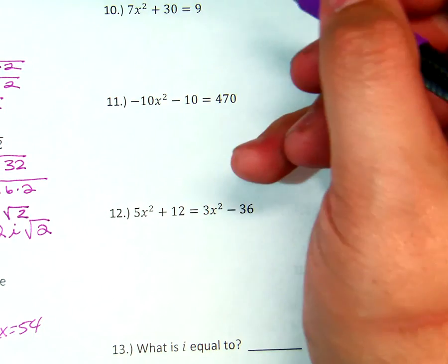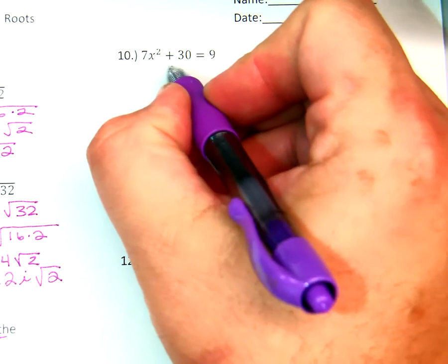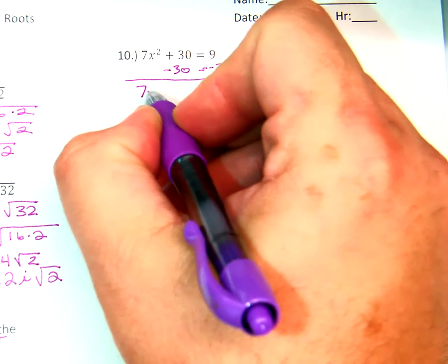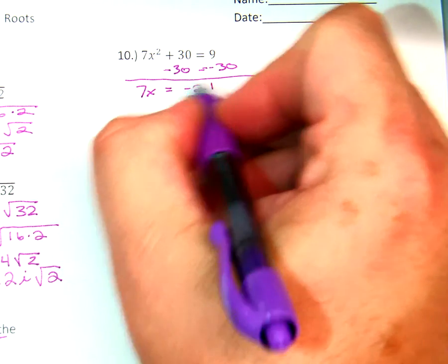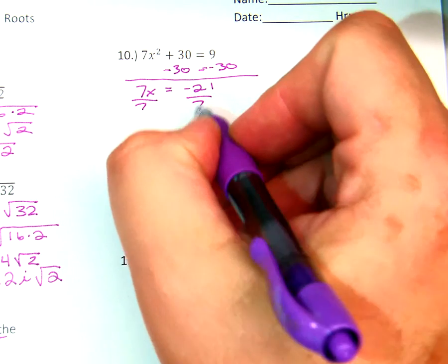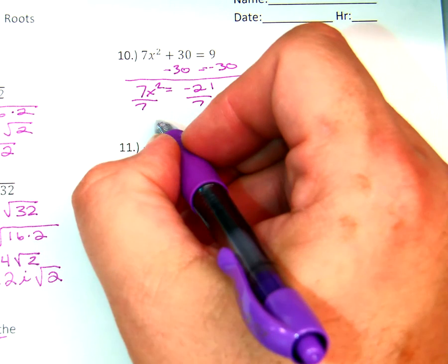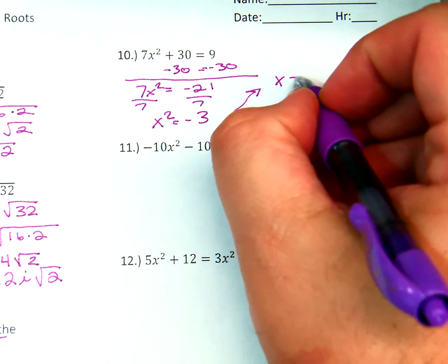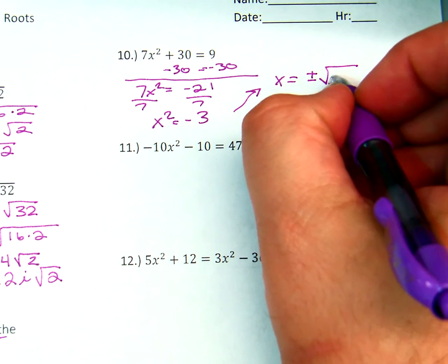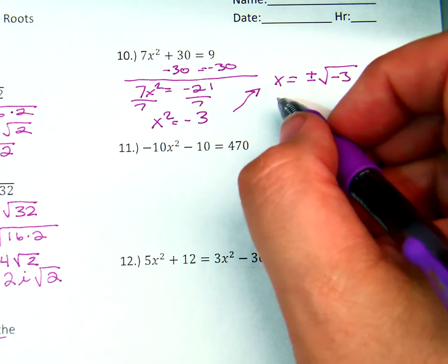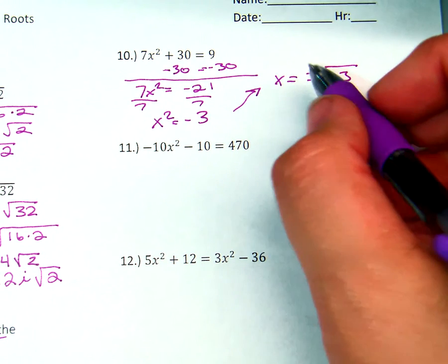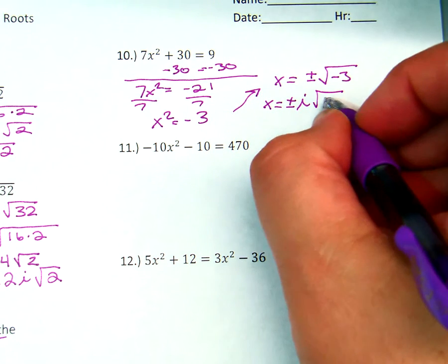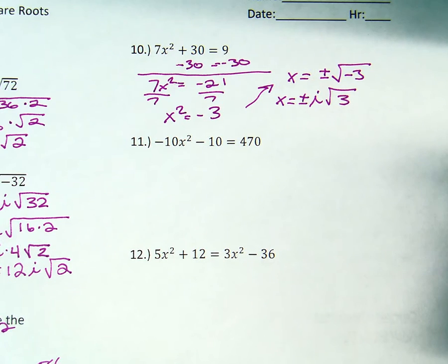Now we have to subtract 30 from both sides: 7x squared equals negative 21. Dividing gives x squared equals negative 3. So x is going to be equal to positive and negative square root of negative 3. We can take the square root of a negative number now because we know that one special imaginary number. So x equals positive and negative i times the square root of 3. Negative numbers shouldn't scare us — we just take out an i and do the same thing we always do.